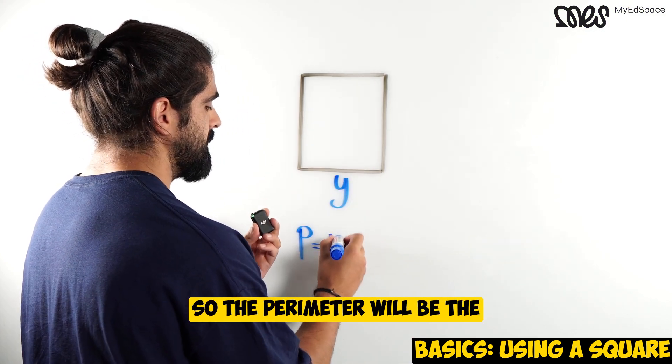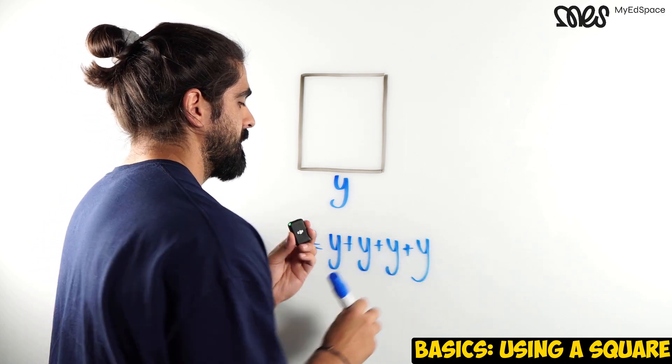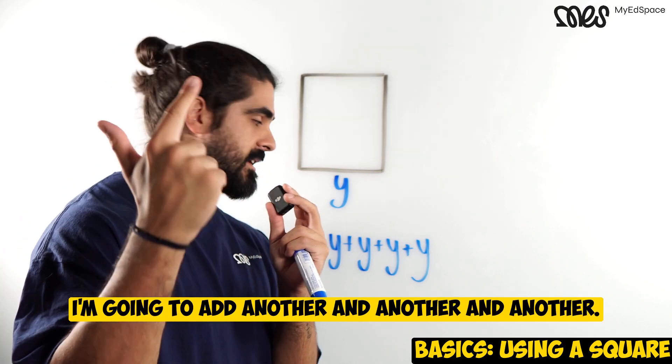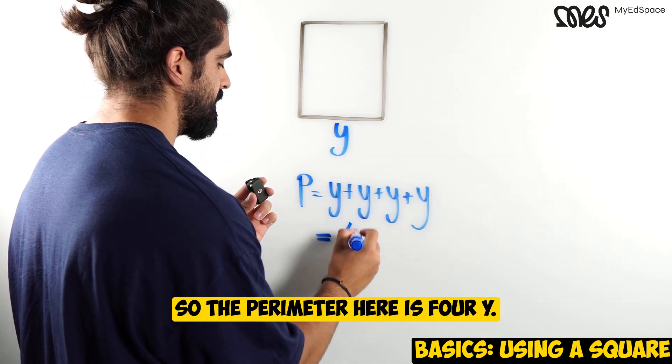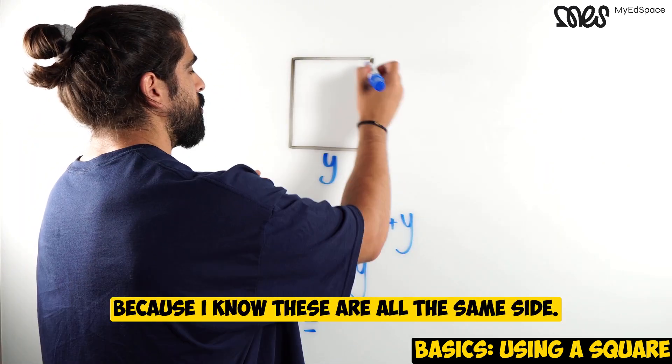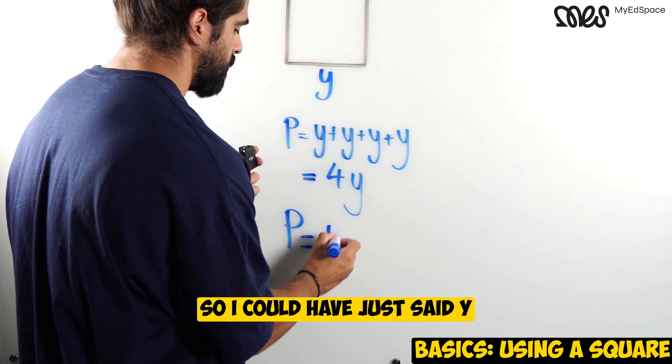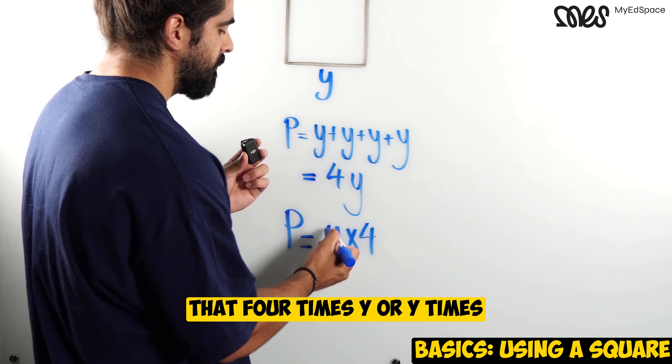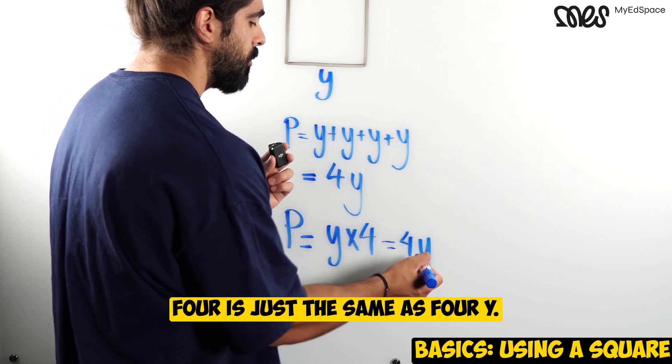So the perimeter will be the addition of all of these sides. Now, it's in the language. I have y, one of them. I'm going to add another, and another, and another. I have 4y. So the perimeter here is 4y. I could have done this another way. Because I know these are all the same side, I could have just said it's y times 4. So I could have just said y times 4, which then indicates that 4 times y, or y times 4, is just the same as 4y.